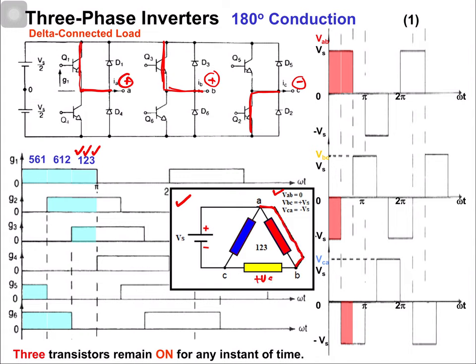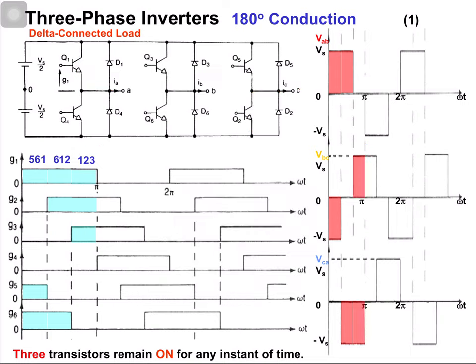From the equivalent circuit, vab = 0, vbc = +Vs, and vca = -Vs. These values are shown: vab is 0, vbc is +Vs, and vca is -Vs.